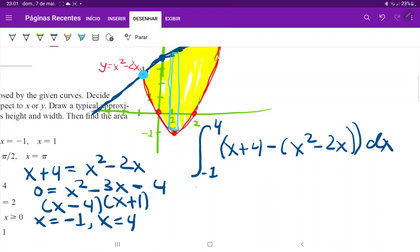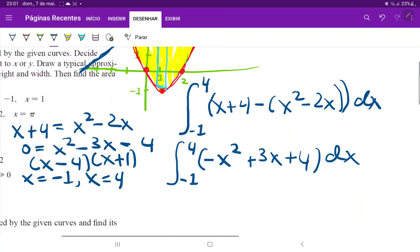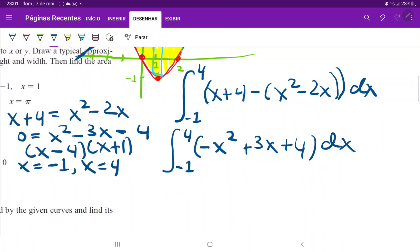So, now let's just clean this up a little bit. So, this is the integral from minus 1 to 4 of minus x squared. I always like to put it in decreasing powers. Minus minus 2x is plus 2 plus x. So, plus 3x and then plus 4, all this times dx. So, now we just integrate it. It's very simple applying the reverse power rule. This is minus x cubed over 3 plus 3x squared over 2 plus 4x from negative 1 to 4.